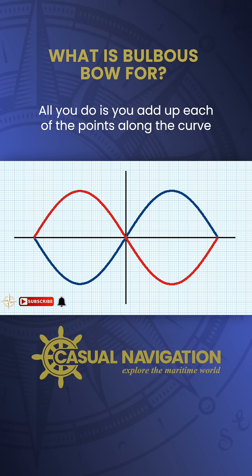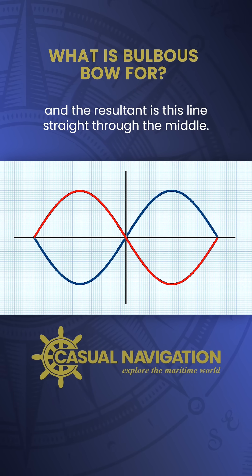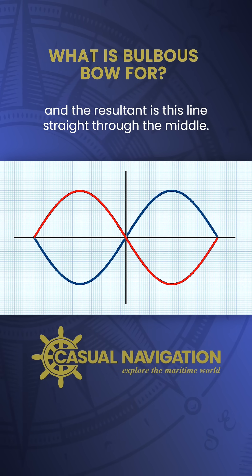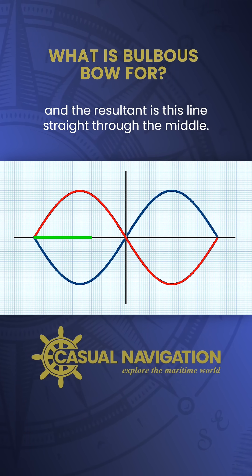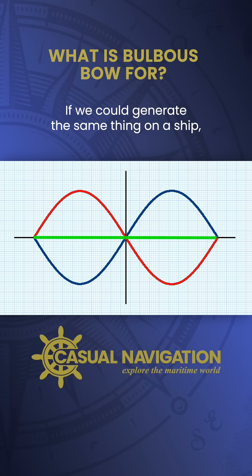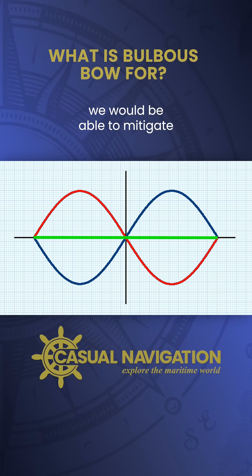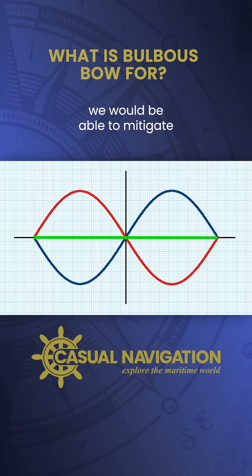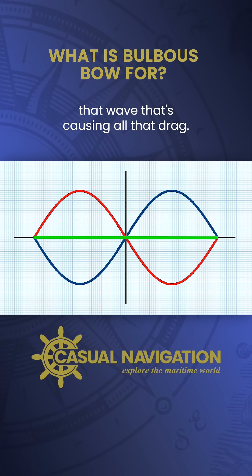All you do is you add up each of the points along the curve, and the resultant is this line straight through the middle. If we could generate the same thing on a ship, we would be able to mitigate that wave that's causing all that drag.